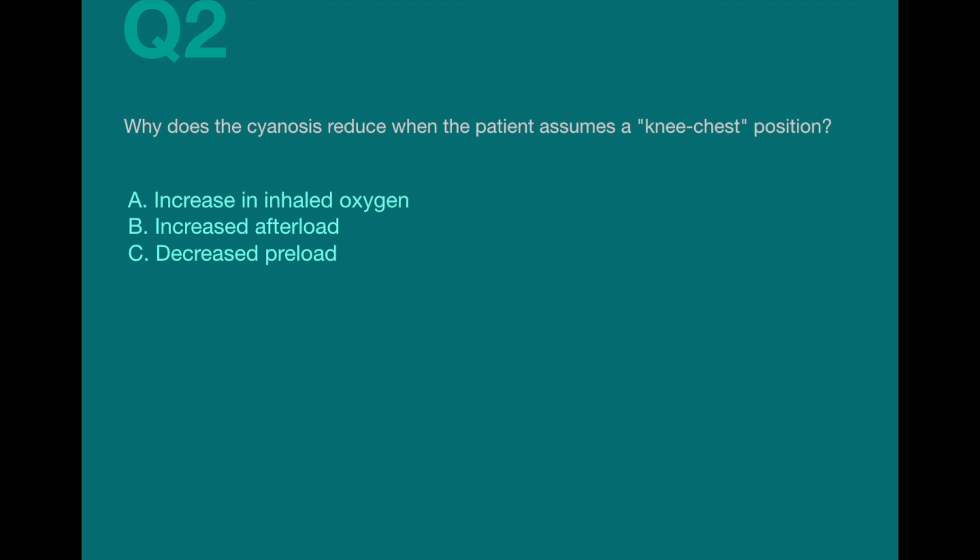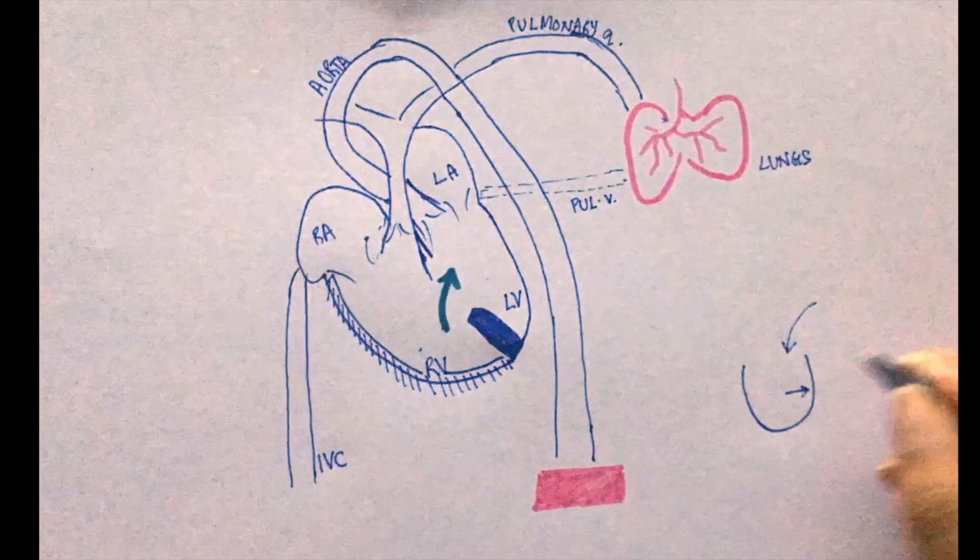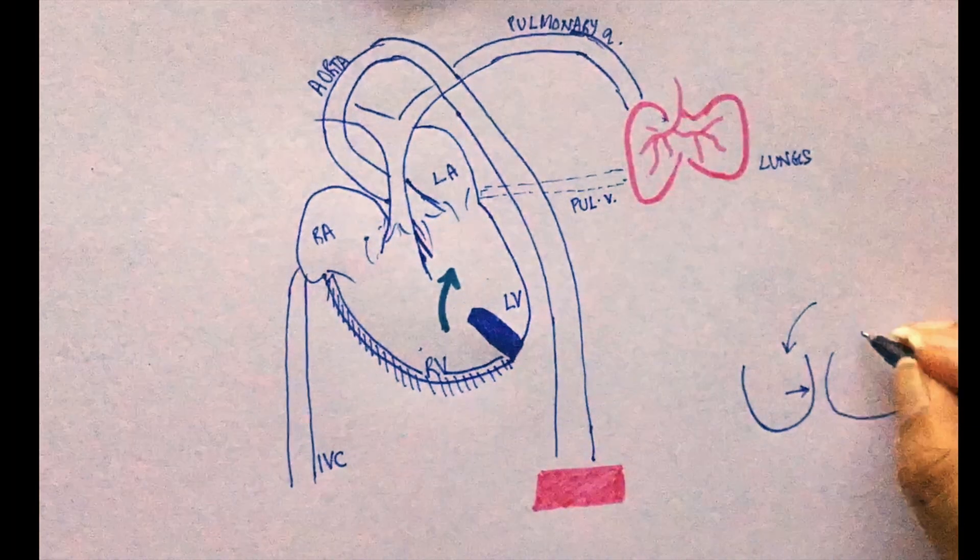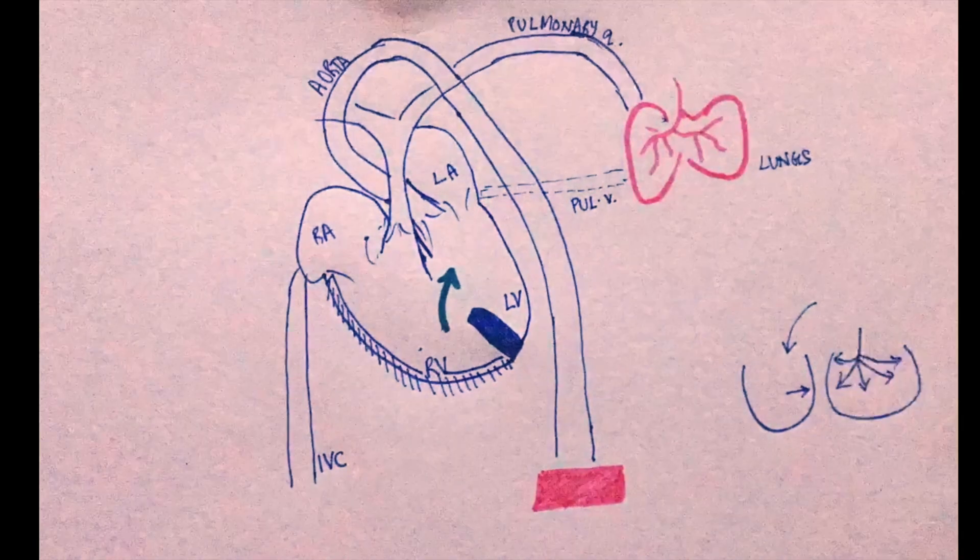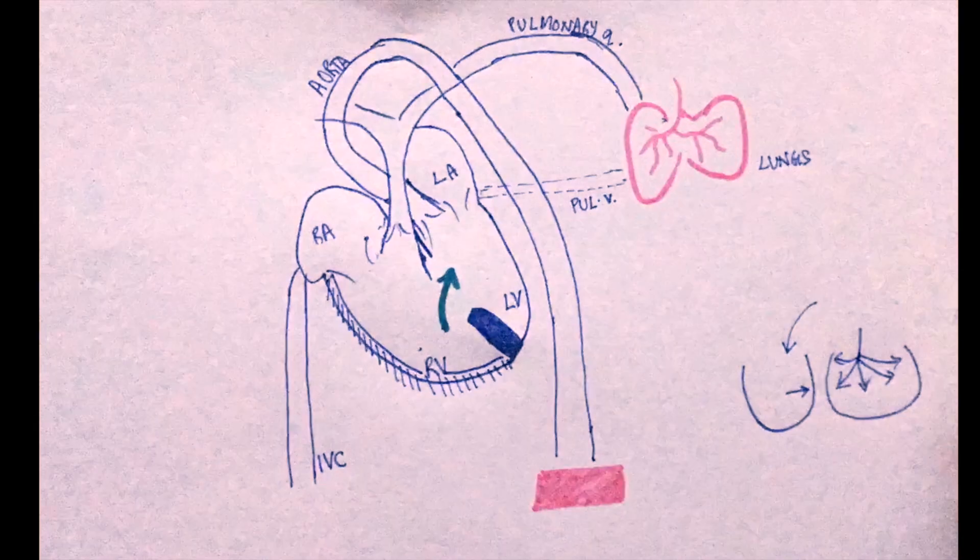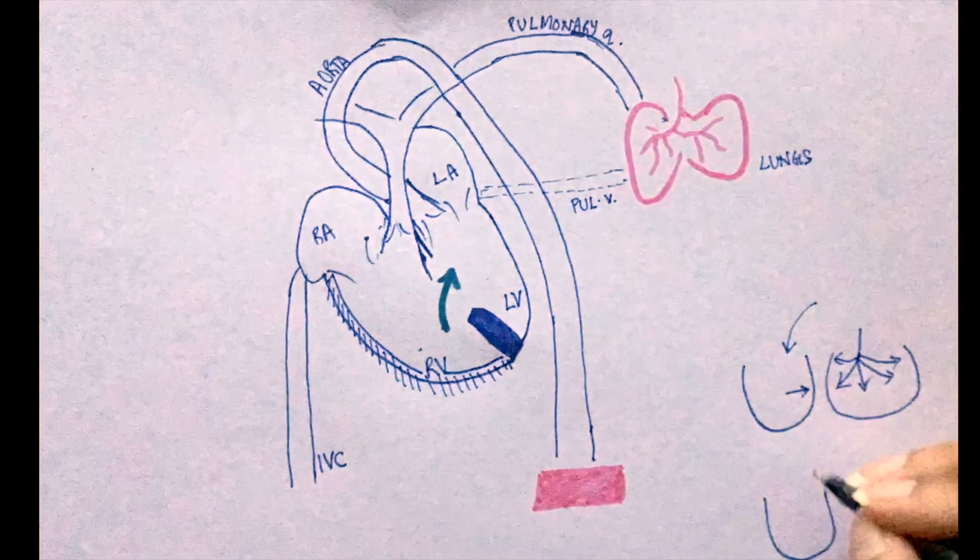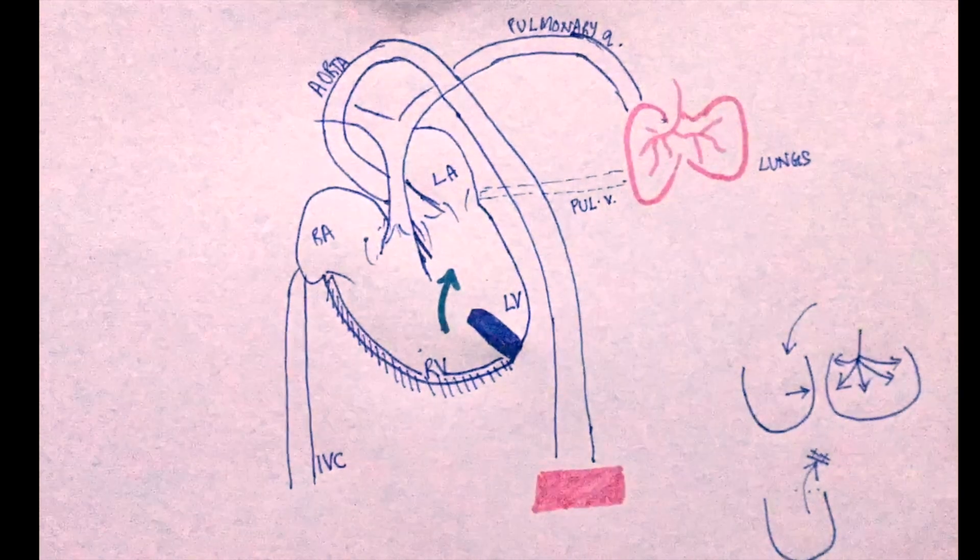To interpret this, we need to make sure we know what each of these things mean. Preload is the amount the heart muscle stretches when it gets filled. Greater the blood that comes to the heart, the more the heart muscles will stretch and hence, greater will be the preload. Afterload is the amount of pressure that the heart must work against in order to pump blood out of the heart.